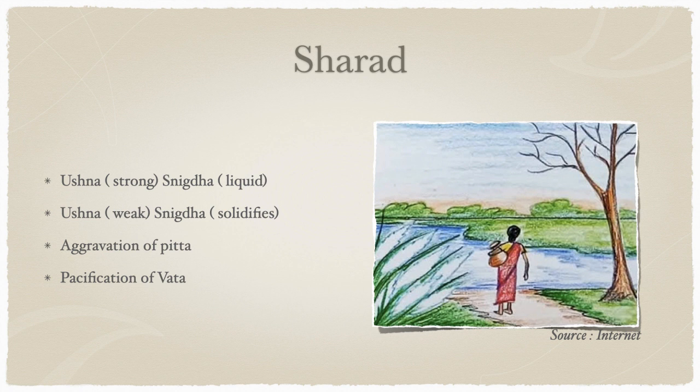In sharad ritu, when clouds disappear the environment clears and there is a strong sunrise — suddenly it becomes ushna. There is already snigtha in a more liquidized form from the monsoon, and this snigtha along with ushna aggravates pitta. Ushna and snigtha is opposite to the nature of vata, which is shita and ruksha — right opposite — so there is pacification of vata. Thus in the beginning of sharad there is an aggravation of pitta.